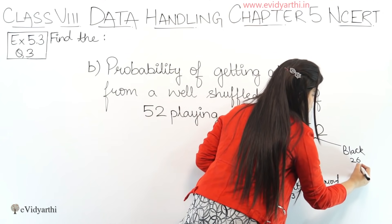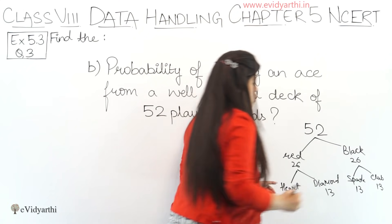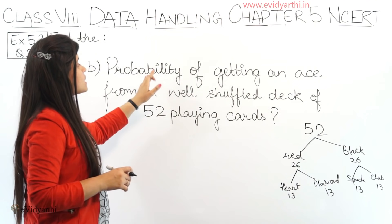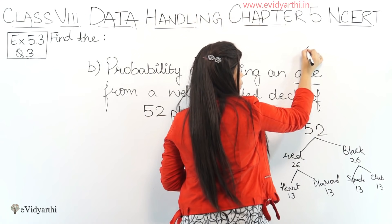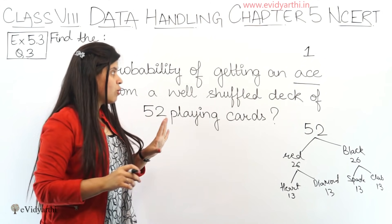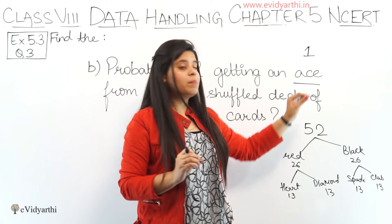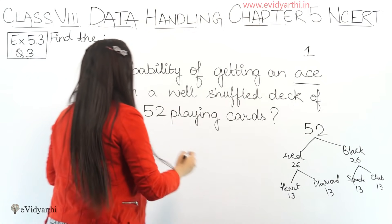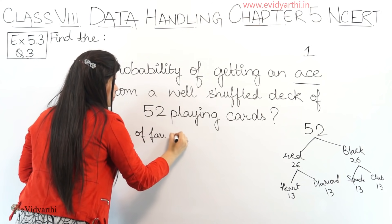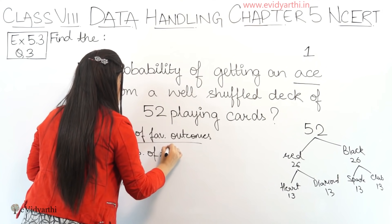Similarly, in black cards there are also two types: one is spade and the other one is club, again 13 each. So that is how the full deck of 52 playing cards is structured. Now what they are asking is the probability of getting an ace. The ace is the card with number one on it — that is considered as ace. You shuffle the whole deck and draw one card; what is the probability that it has a one written on it? So again we will use the probability formula: number of favourable outcomes upon total number of observations.